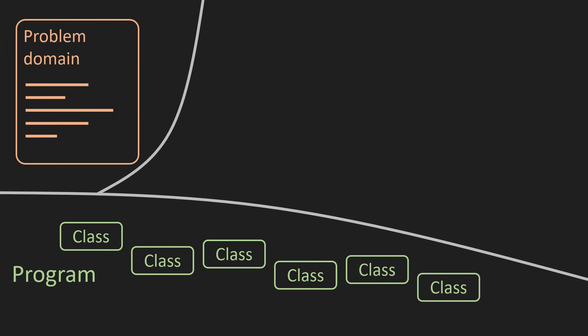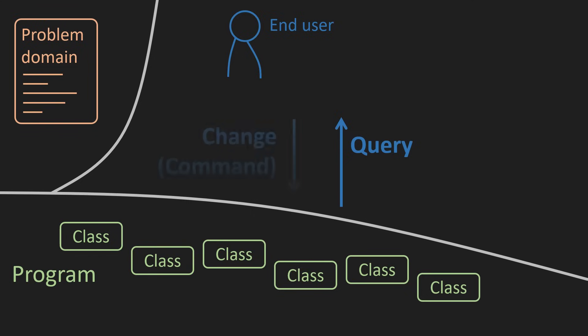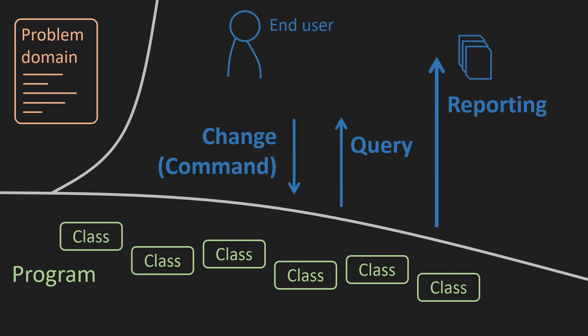Another problem comes from the application users' view on the matter. We recognize two principal interactions with the system: querying for the data and changing them. Queries of one sort are so dramatic that they earned their own name — reports. We often move reporting aside and deal with reports separately because they can impact the overall system performance.